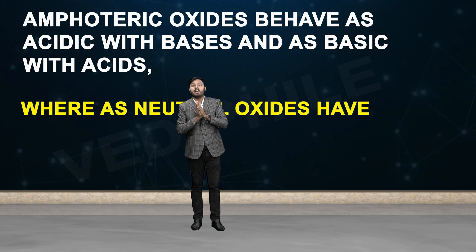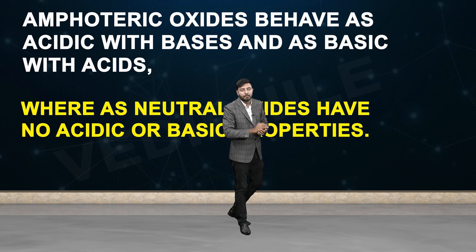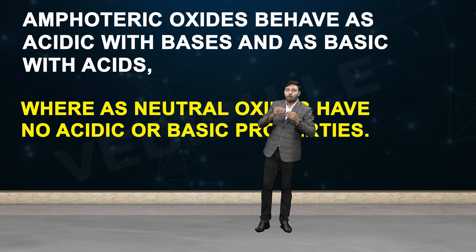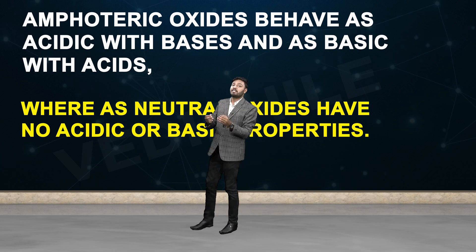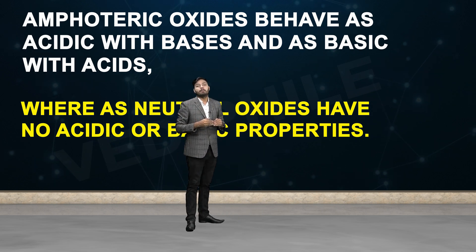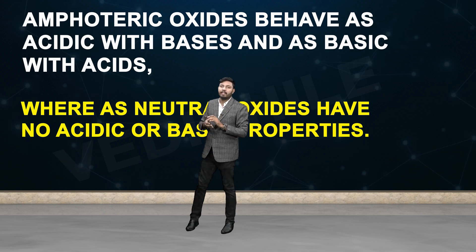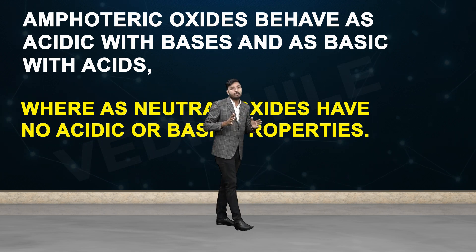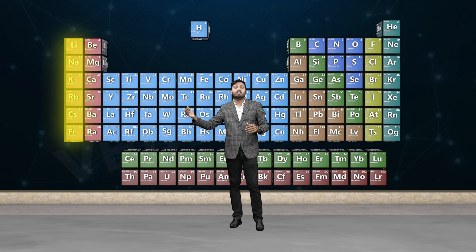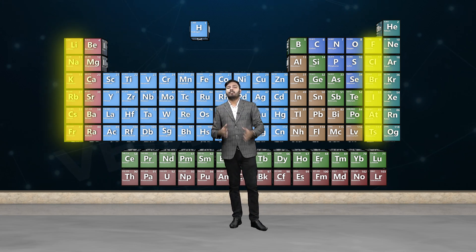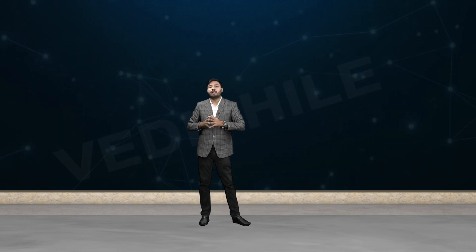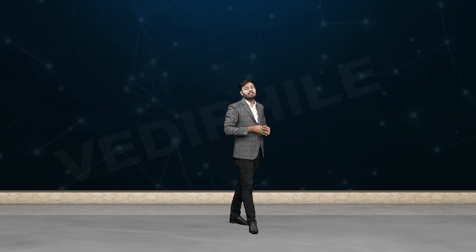Neutral oxides have no acidic or basic properties. So amphoteric oxides behave as acids with bases and as bases with acids, while neutral oxides have neither acidic nor basic properties. Chemical reactivity is thus highest at the extreme left and the extreme right of a period. With this, our third chapter — Classification of Elements and Their Periodicity — is complete. Thank you.